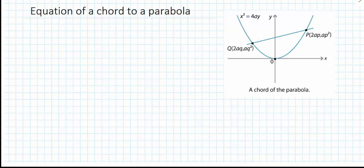In this video I'm going to look at the equation of a chord to a parabola. The parabola we're looking at is x squared equals 4ay and the points I'm working with are p and q.